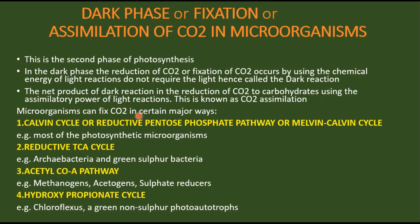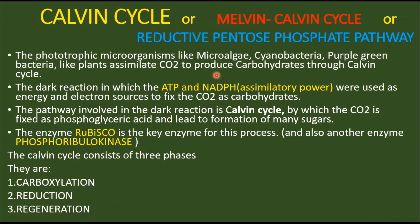Coming to the Calvin cycle: the majority of phototrophic microorganisms — microalgae, cyanobacteria, purple and green bacteria — fix carbon dioxide and produce carbohydrates through this cycle, just like plants. We know that plants assimilate carbon dioxide with the help of the Calvin cycle, and phototrophic microorganisms similarly fix carbon dioxide and convert it into carbohydrates via the Calvin cycle.